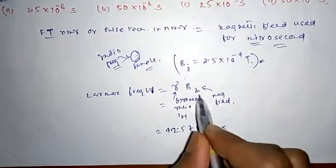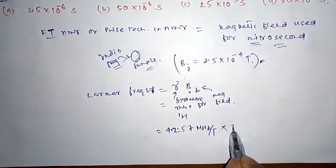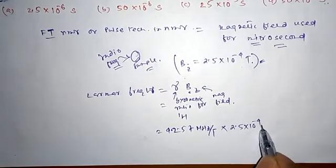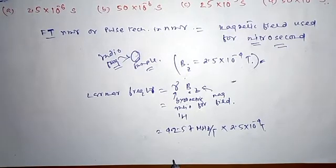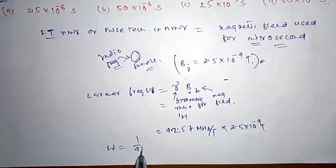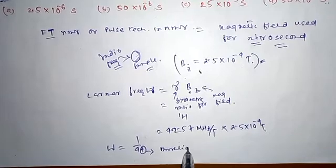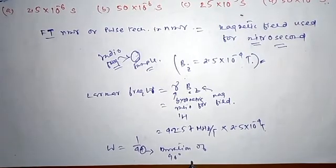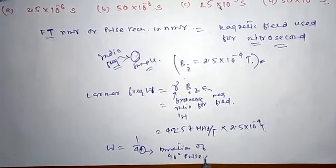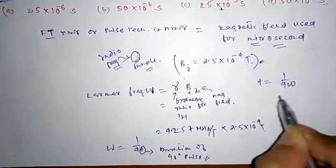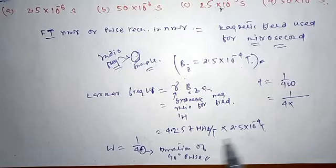So you have to know one formula: the Larmor frequency ω₁ is given by 1 over 4t, where t is the duration of the 90 degree pulse. So here, t equals 1 over 4ω₁, which is 1 over 4 times this value...